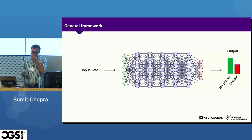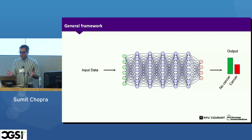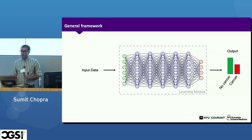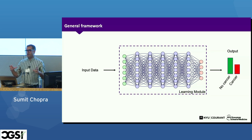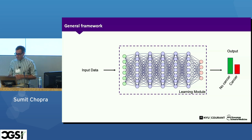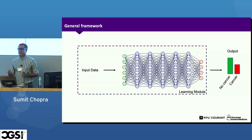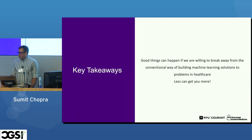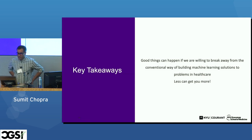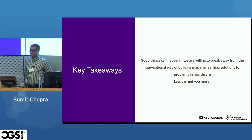This is basically a general framework I'm arguing for. Currently the setup has input healthcare data — EHR, images, or whatever — going into a machine learning model that you focus all your energy on to solve the final task. What I'm arguing for is to also make the data collection part of the learning module: learn what data you need to acquire for a subsequent machine learning model to give the best possible answer. The short story is that good things can happen if one is willing to break away from the conventional way of doing machine learning for healthcare — less can actually get you more. Thank you.